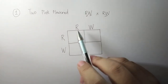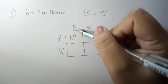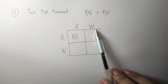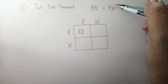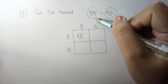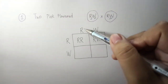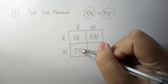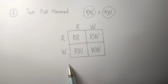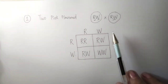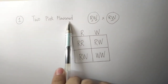To cross: we have R and R giving us RR — the genotype and allele of RR should be in capital letters. For the next box, we have W and R. Take note, the arrangement should match the given genotype, so we write R and W. Then this gives us W, and the last box gives us WW. We are done with the Punnett square. This is the result when two pink-flowered four o'clock plants are crossed.